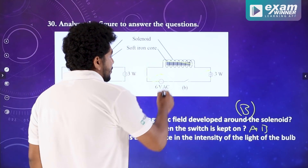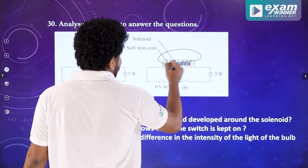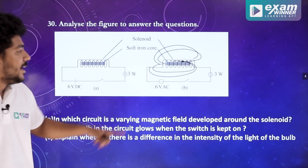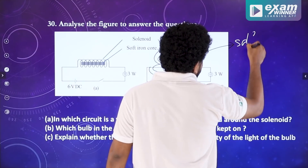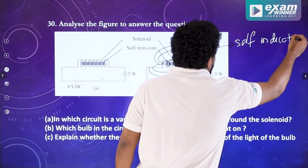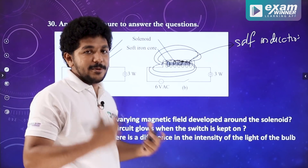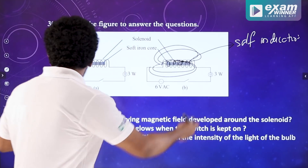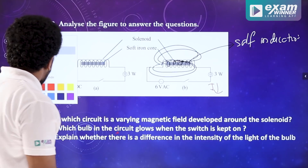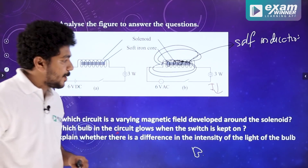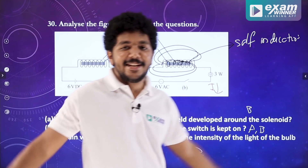Explain whether there is a difference in the intensity of light. In the two circuits, in the AC circuit, there is a variation in the magnetic field of the solenoid. This variation in the magnetic field causes self-induction. We are learning about self-induction. This induced current is opposite to the external current, so the current in the bulb is reduced. In the DC circuit, if you have current in the BN circuit, bulb B glows. The answer is B. That is 4 marks.